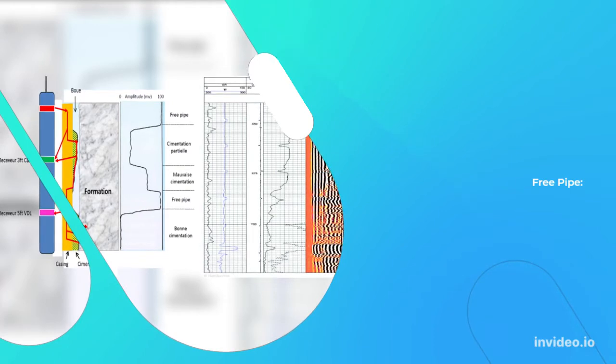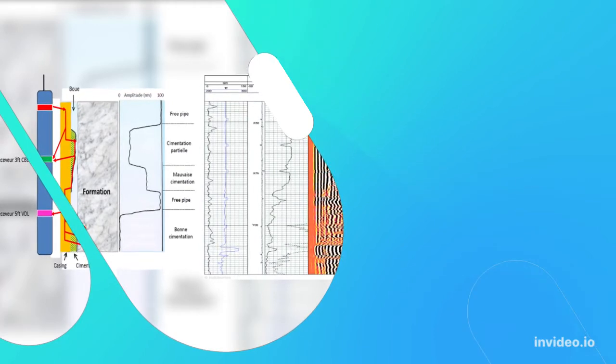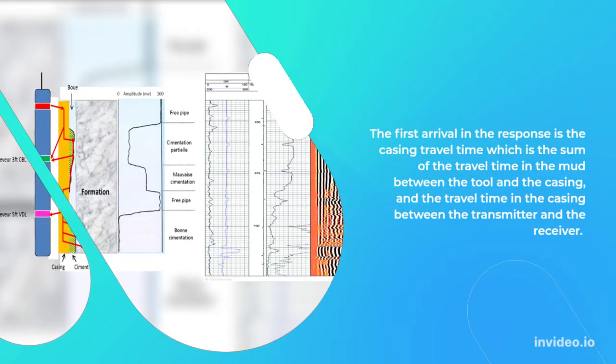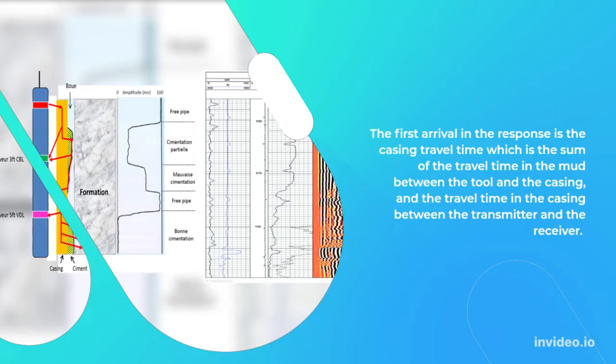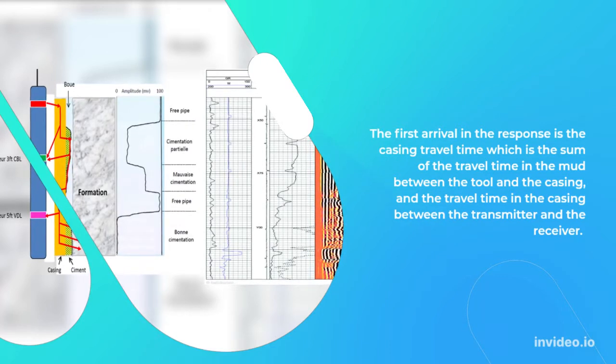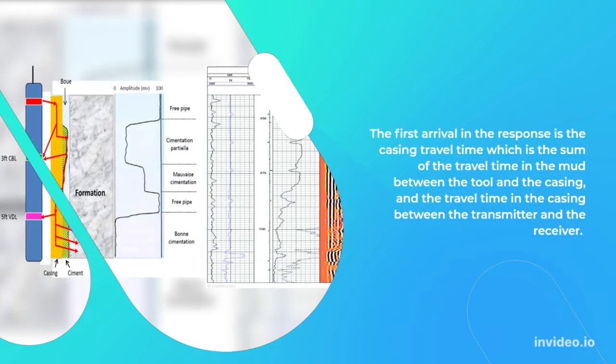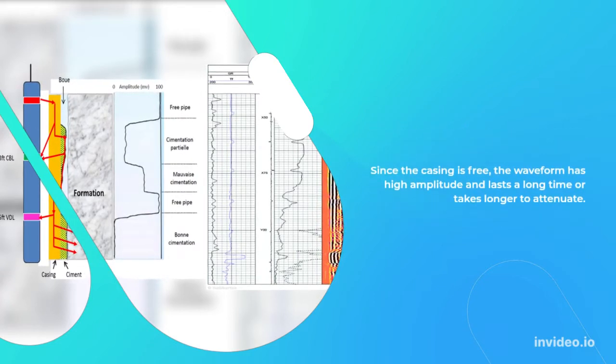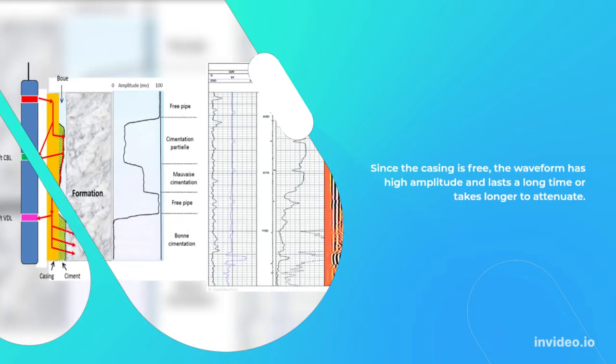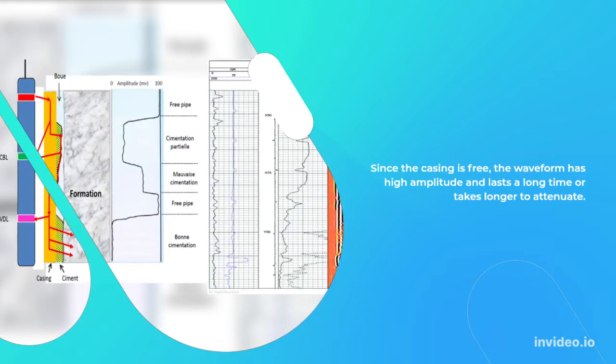Free pipe: The first arrival in the response is the casing travel time, which is the sum of the travel time in the mud between the tool and the casing, and the travel time in the casing between the transmitter and the receiver. Since the casing is free, the waveform has high amplitude and lasts a long time or takes longer to attenuate.